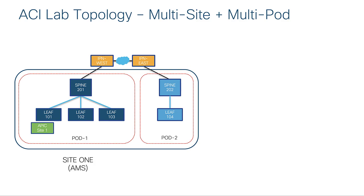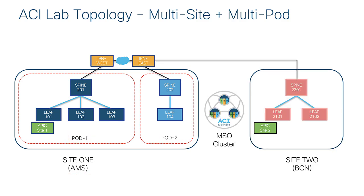I'm starting out with an existing multi-pod setup. This is my fabric — not representative of a production-level fabric, as I'm missing redundancy, but this is what I have in my lab. I'm starting with two pods that exist in site number one, Amsterdam. Then I'll bring in site number two, Barcelona, connect it all up, and configure all of the infra through MSO itself.